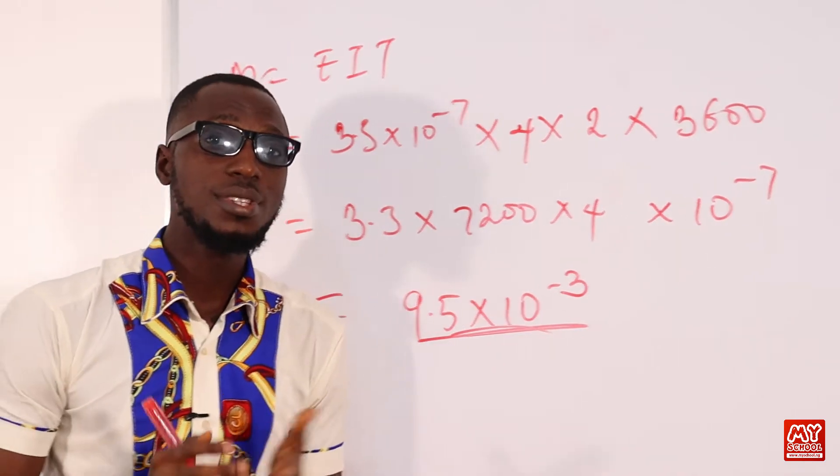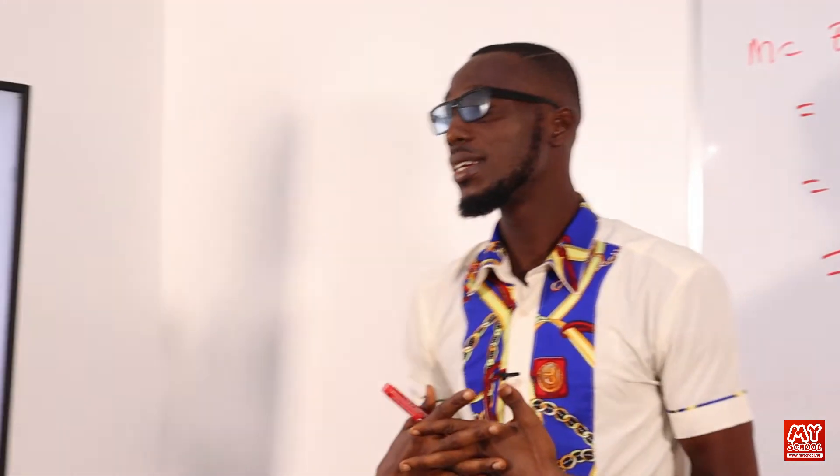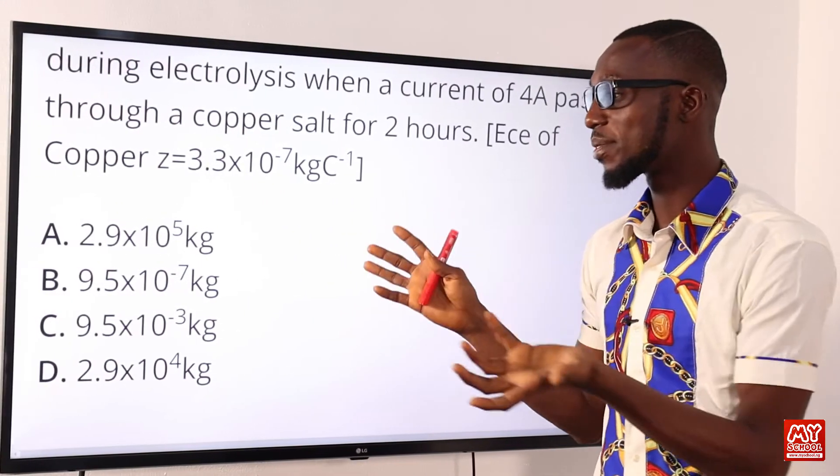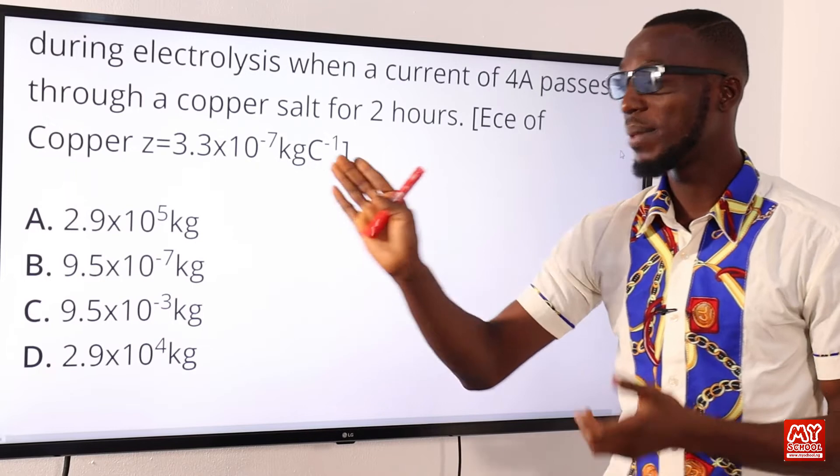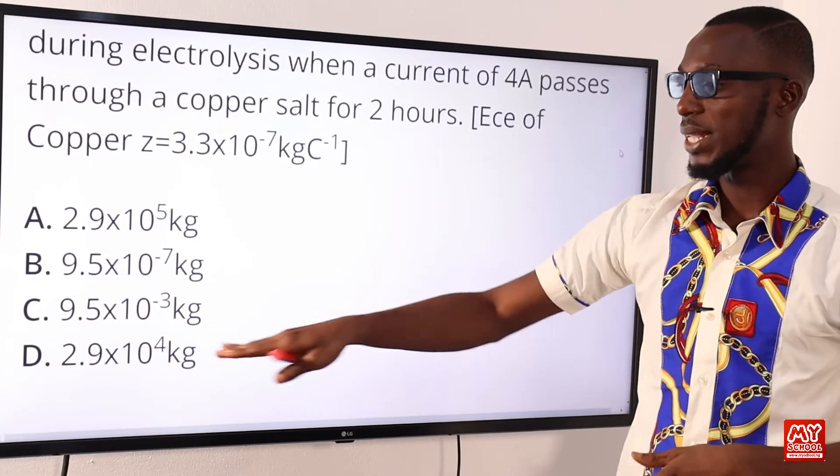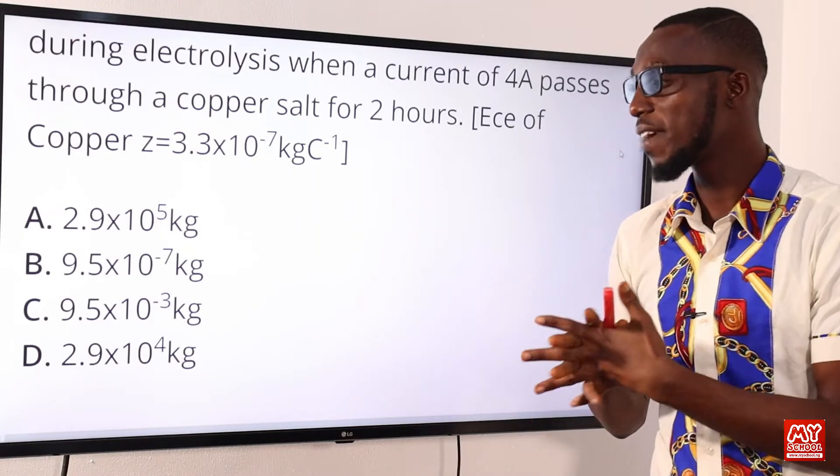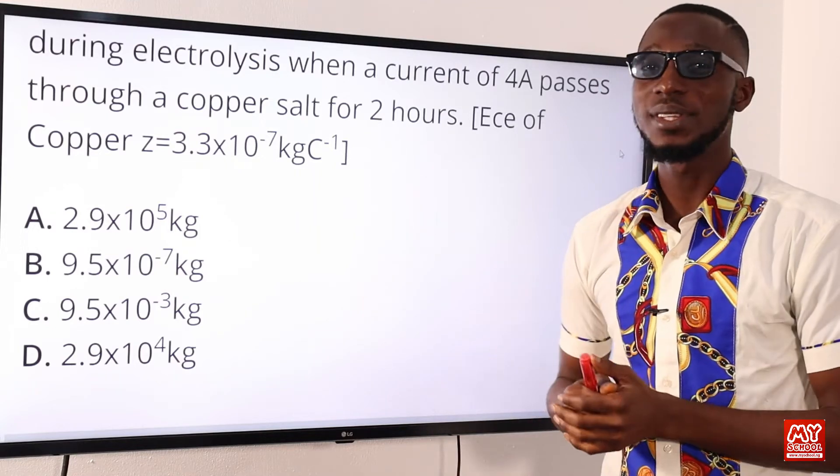So, let's just go back to the screen to select the correct option. 9.5 times 10 raised to power minus 3. If we look through the options provided, you will find that in option C. Remember, it's mass kilogram. It's not out of place. So, the correct option, once again, is option C. 9.5 times 10 raised to power minus 3 kilogram.